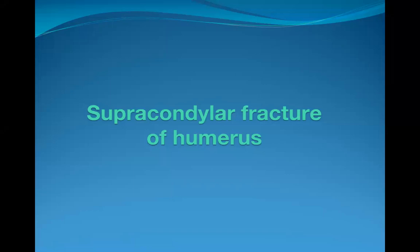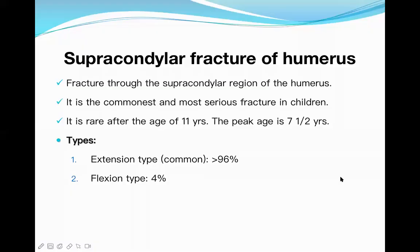Supracondylar fracture of the humerus — the lower part of the humerus has condyles and epicondyles. The area immediately above these is called the supracondylar area, which is quite weak because it is the junction between the diaphysis and epiphysis, and therefore between cortical bone and cancellous bone. As a result, that area can fracture very easily.